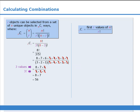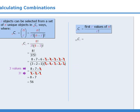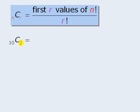OK, now let's practice. We'll begin with 10 choose 2. So here the r value is 2, so the numerator will be the first two values of 10 factorial, and the denominator will be 2 factorial.